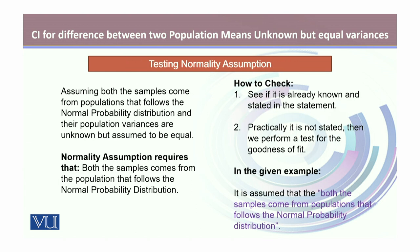The second assumption is normality — that both samples come from a population that follows the normal probability distribution. To check this, it is sometimes known a priori from different phenomena, or we can test it ourselves using goodness-of-fit tests. In this given example, both samples come from a population that follows the normal probability distribution, as already stated in the problem. Hence we assume this assumption is verified.